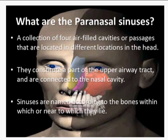Now let's look at what paranasal sinuses are. Paranasal sinuses are a collection of four air-filled cavities or passages located in different locations inside the head. They constitute a part of the upper airway tract and are connected to the nasal cavity. Sinuses are named according to the bones within which, or near to which, they lie.